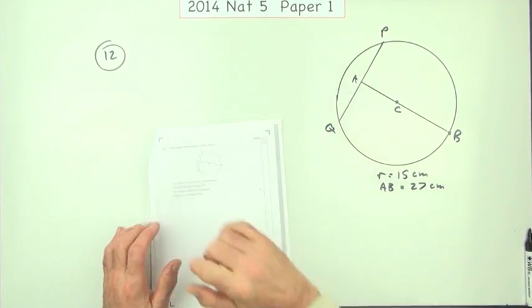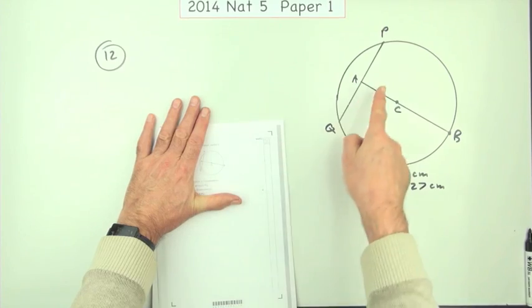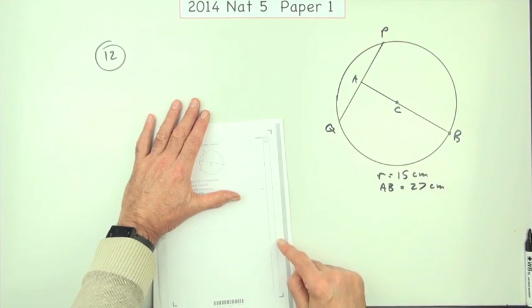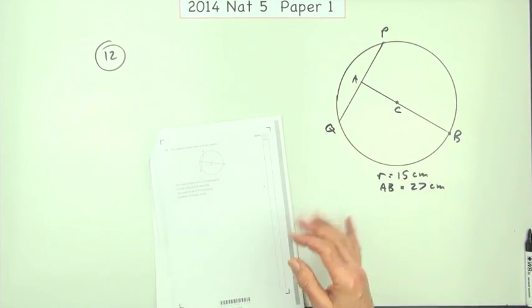Number 12 from Paper 1, the 2014 National 5. As soon as you see this, as soon as you see that line drawn in a circle joining two points of the circumference, you think that's a chord question. And as soon as you've got a chord question, I'm not even going to look at this yet.